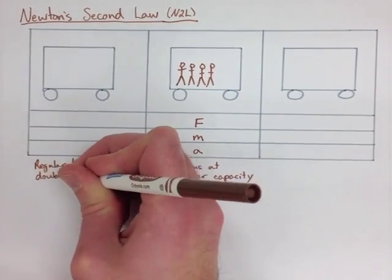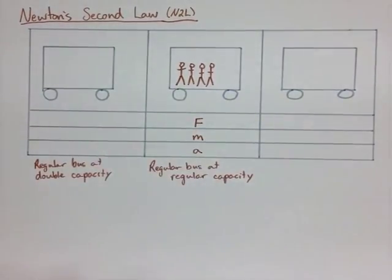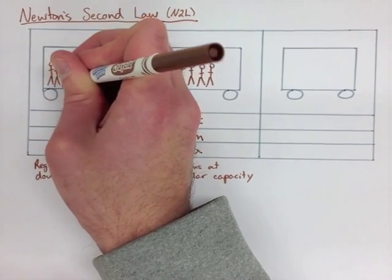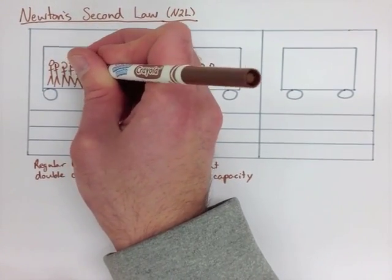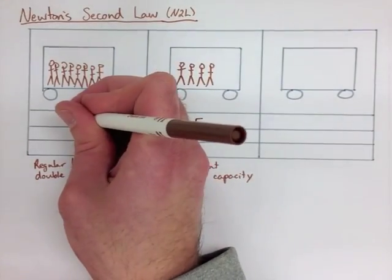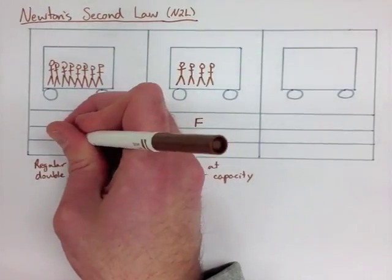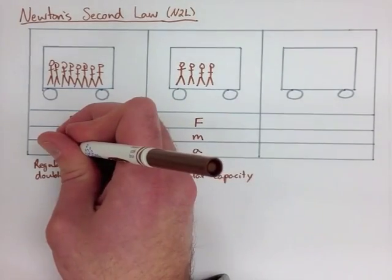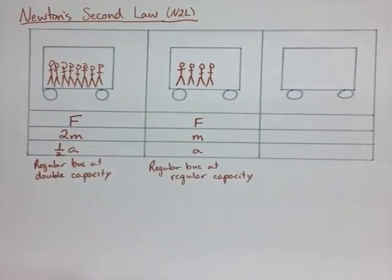Now let's say we still have that regular bus, but we double the capacity. Knowing that with inertia, when we increase the mass, it's harder to accelerate, we're going to apply the same force. We have double our mass, which is going to decrease our acceleration. It's actually going to make it half of our acceleration.